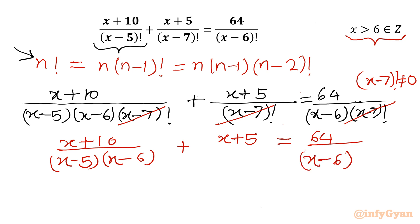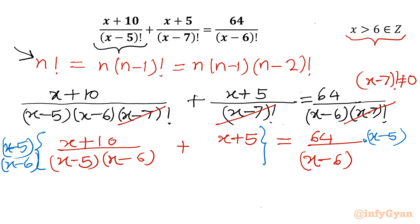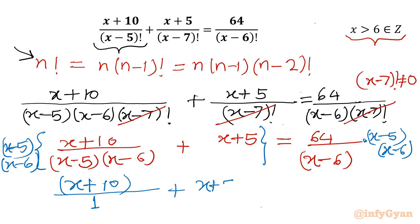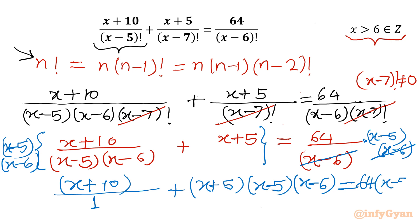Now I will multiply both sides by (x-5)(x-6). On the left, (x+10) / (x-6) cancels the (x-6), leaving (x+10), plus (x+5)(x-5)(x-6). On the right, (x-6) cancels, leaving 64(x-5).